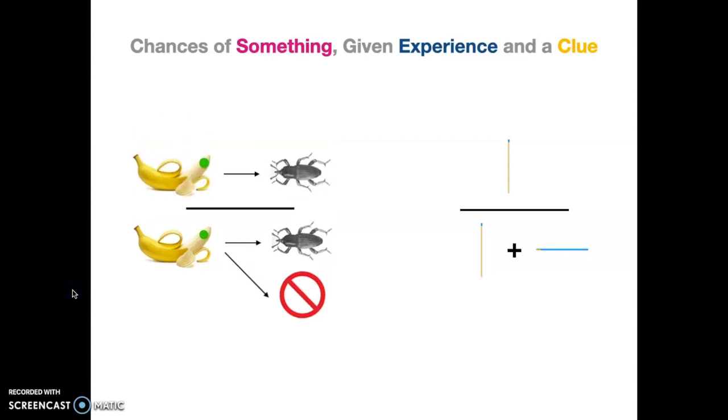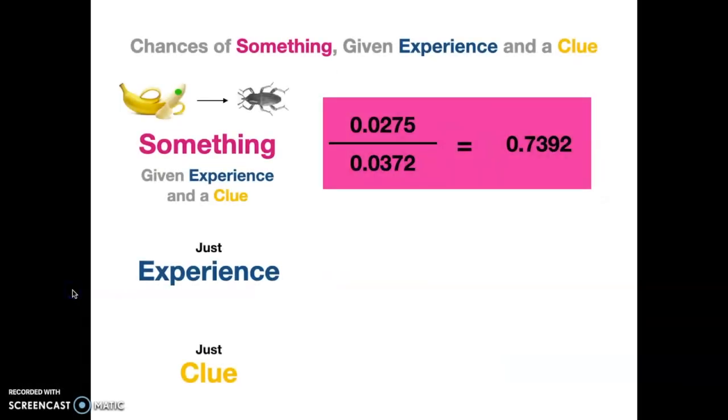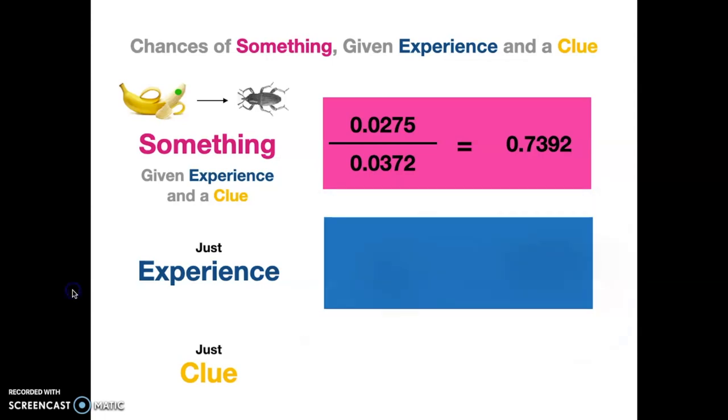And again, we're just dividing just like we show over on the left here where it's the base case divided by all cases. So when we do that, we find that we come up with 0.7392 based upon what we had calculated earlier. So let's take a look at that compared to our other methods. So if we had calculated based on just experience rather than something given experience and a clue, in that case, one out of 36 bananas have a beetle in them. So we would be at 0.02778. If we were using just the clue, we would have said 99 out of 100 bananas are going to have a beetle in them.